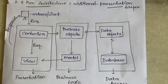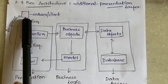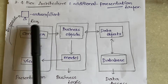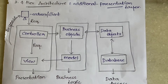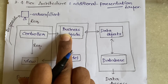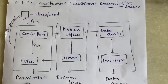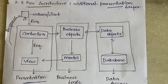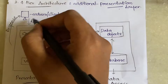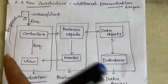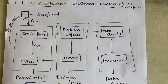In four-tier architecture, the end user sends a request which is taken by the presentation layer, where we have the controller and the view. The controller sends the request to the business objects and data objects, and all the communication takes place. Finally, the response is given back to the end user through the presentation layer itself. The request goes to the presentation layer, all processing happens, and the response comes back through the presentation layer.